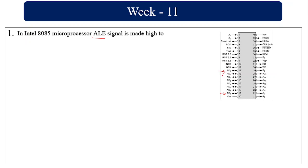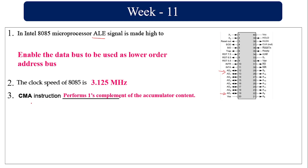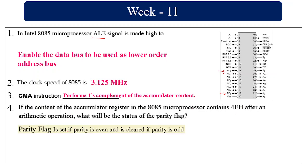The clock speed of the 8085 is 3.125 MHz. CMA is complement the accumulator — it performs the one's complement of the accumulator content. Here the accumulator content is given as 4E. After the arithmetic operation, what will be the status of the parity flag?